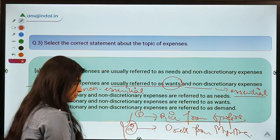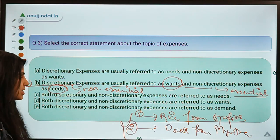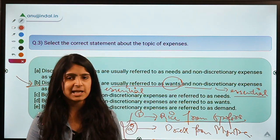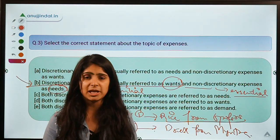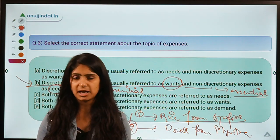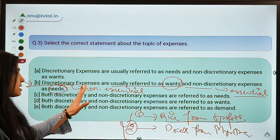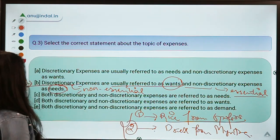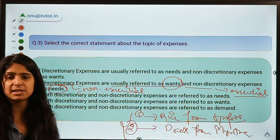We spend on discretionary expenses just to fulfill our wants or luxuries. Whenever a country is going through a recession, discretionary expenses of people fall because their incomes fall and they try to cut down expenses. If you are going through financial distress, you are not going to watch a movie in a theater or eat out at your favorite cafe, but obviously you have to pay your kids' school fees or buy groceries for the kitchen.